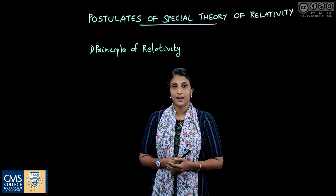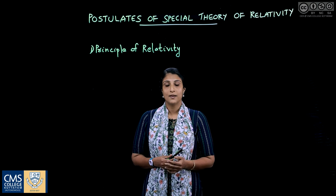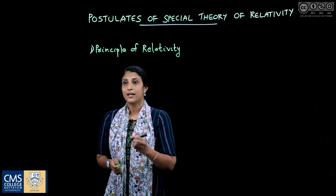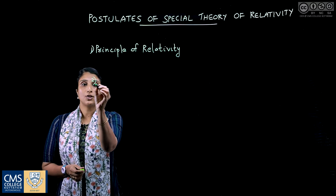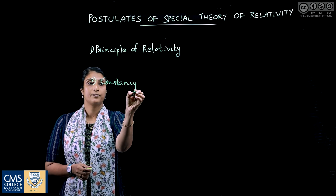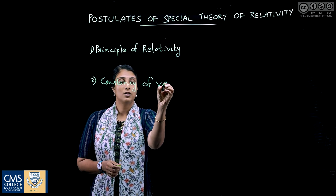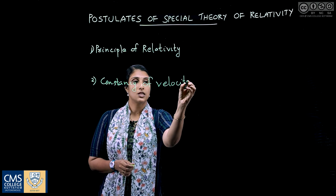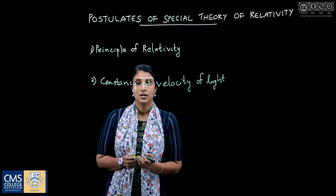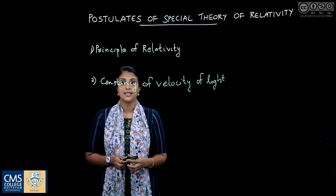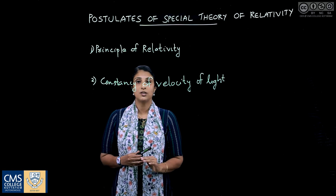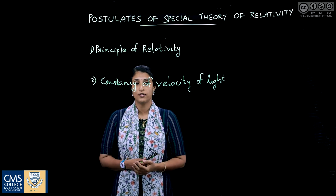We move on to the second postulate of relativity. The second postulate is based on many experiments. It is the postulate of constancy of velocity of light: the velocity of light in free space has the same value in all inertial frames of reference.